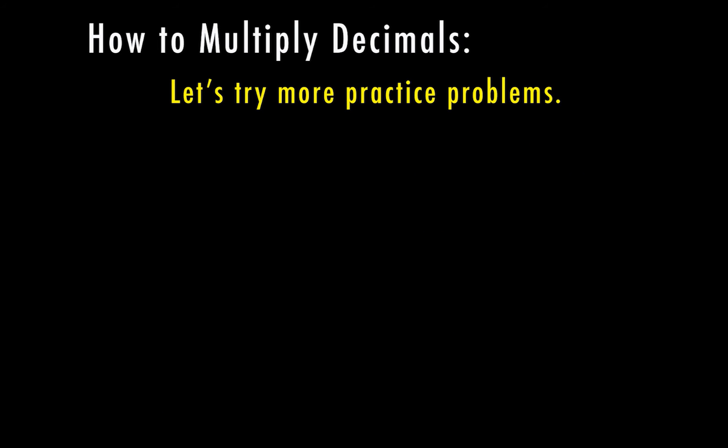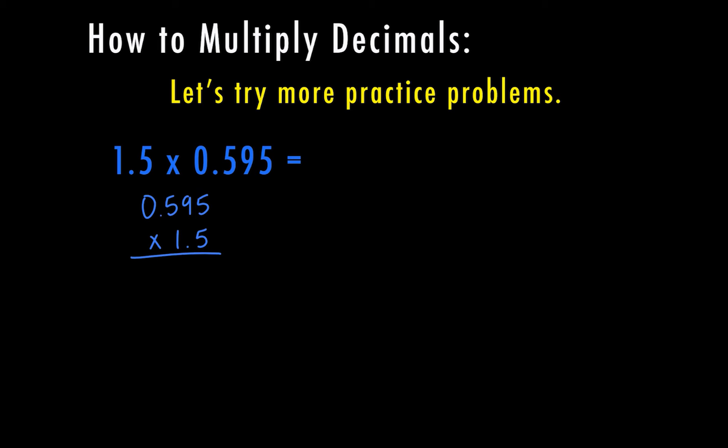I know we're getting the hang of this, so let's go ahead and try a couple more practice problems. I have 1 and a half times 595 thousandths. This one has 2 digits and this one has 3, so let's put the larger digit number on top. Go ahead and pause the video and solve this one, and then we'll check your work.